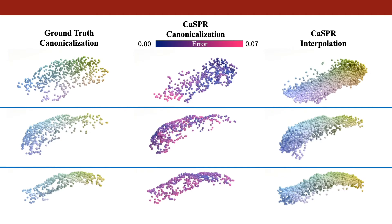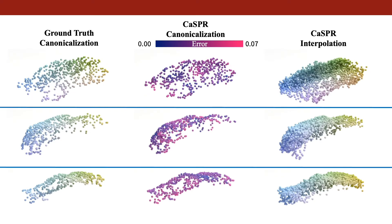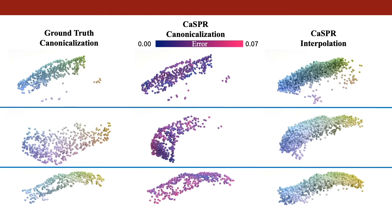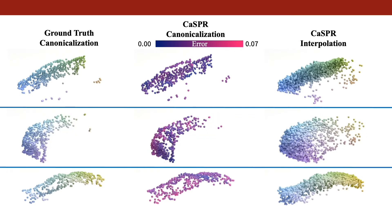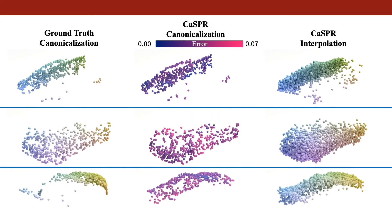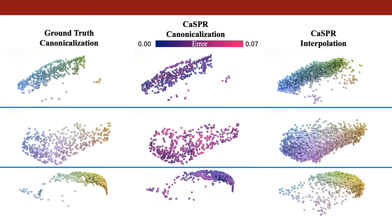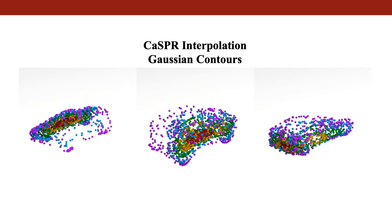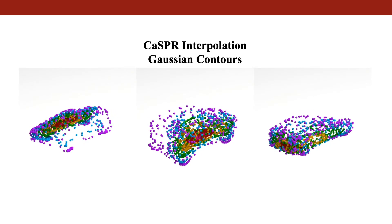Here we show additional results for rigid object motion. For each sequence, the ground truth and predicted canonicalization is shown, along with the interpolation from CASPER. In these examples, we see how the Gaussian distribution is mapped to the object surface by the normalizing flow.